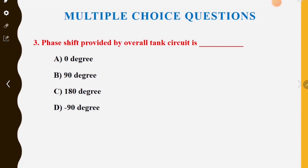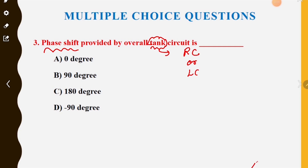Third MCQ: the phase shift provided by the overall tank circuit is — Option A 0 degrees, Option B 90 degrees, Option C 180 degrees, Option D minus 90 degrees. RC or LC circuits provide a 180 degree phase shift. Option C is the correct answer.